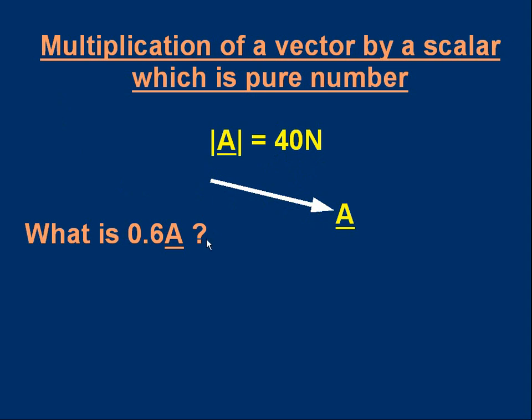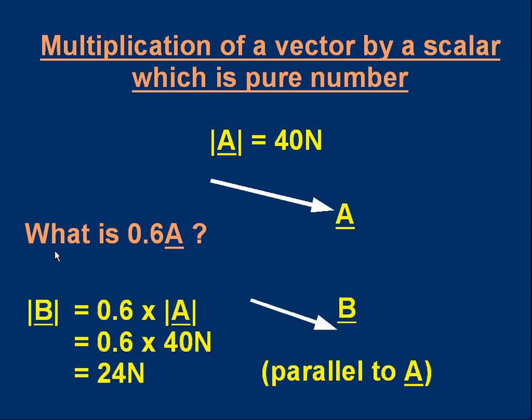The question is: what do we get if we multiply this vector a by a pure number scalar — 0.6, for example? What is 0.6 times a? The answer is a new vector, which I've called b. So we produce a new vector b which is equal to 0.6 times a.